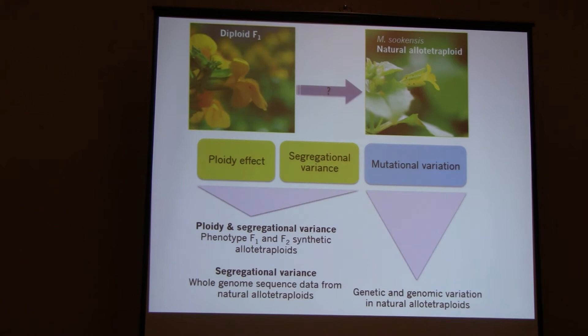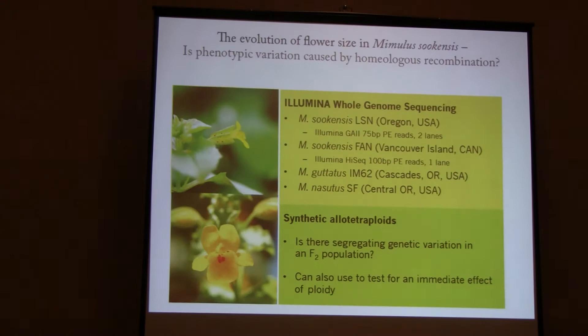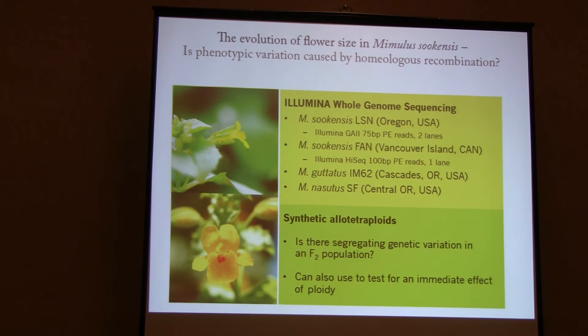I can get at these three mechanisms through a number of experiments. I can look at synthetic allotetraploids — both at their phenotype and look for segregational variants. I can also look at whole genome sequence data from natural allotetraploids to look for homeologous recombination in those large chunks. And finally I can do QTL mapping. This approaches the question from the perspective of something that's been around a long time versus something just created.